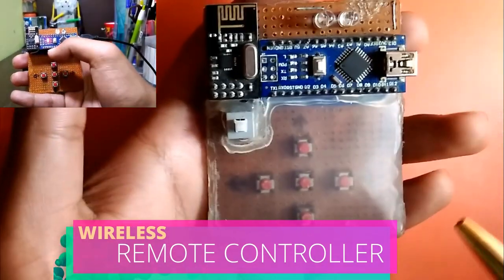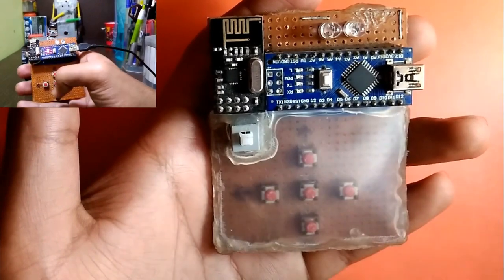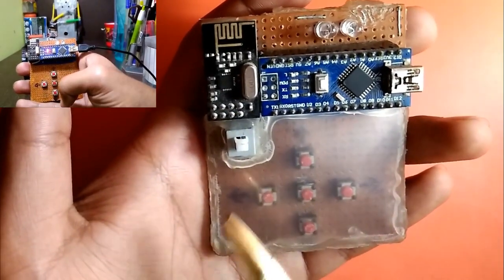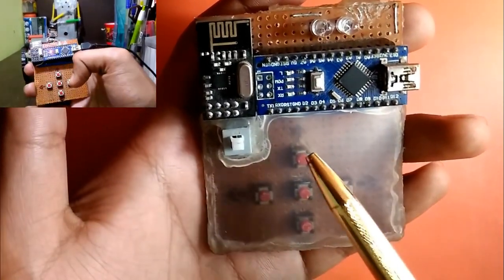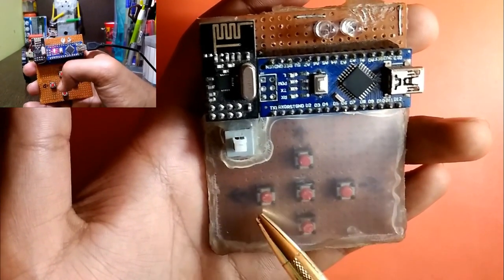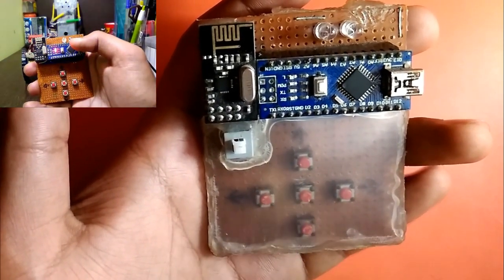This is a remote controller made with Arduino Nano, an RF24 transceiver, a power switch and five control switches: front, back, right, and left. The center one is for controlling the pump.